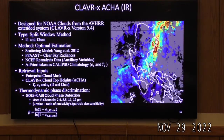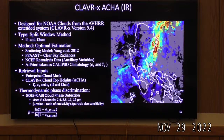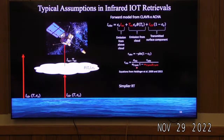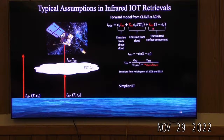The last retrieval we'll look at is the CLAVRX OCHA infrared retrieval—another optimal estimation retrieval that utilizes satellite emitted radiances to make an optical thickness measurement. It utilizes the OCHA cloud top height from a CO2 slicing method to retrieve the cloud top temperature, and uses the 11 and 12 micron channels to get sensitivity to particle size. Typical assumptions for infrared retrievals include clear sky emitted radiances from a radiative transfer model. OCHA seeks to calculate the brightness temperature and cloud emissivity, which is related to optical thickness. There is some scattering in the infrared, but it is very small.